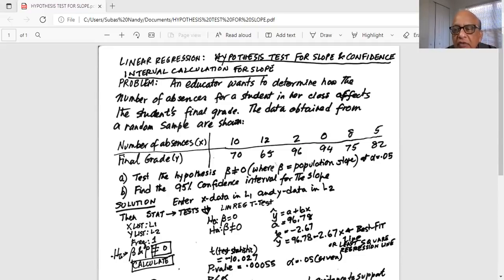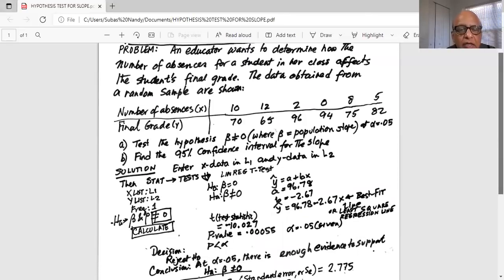So first we will enter the X data in L1 and Y data in L2. Then we will go to stat, press the stat button. Highlight test in the top row and then go down with your cursor to lin reg t-test, linear regression t-test. Scroll down there and then hit enter.